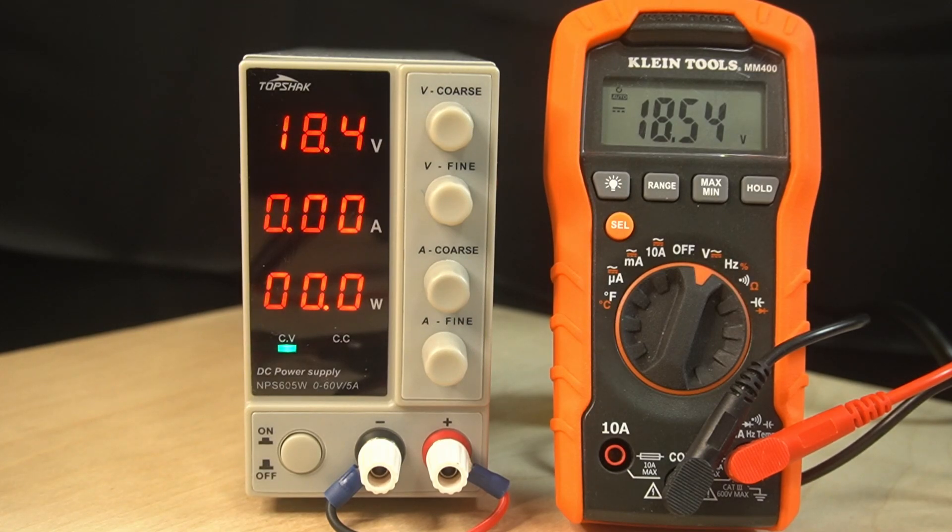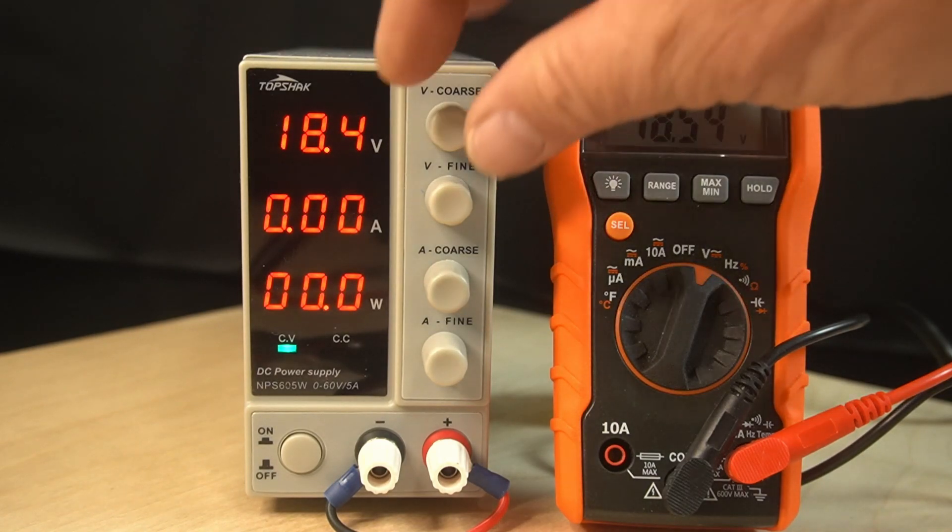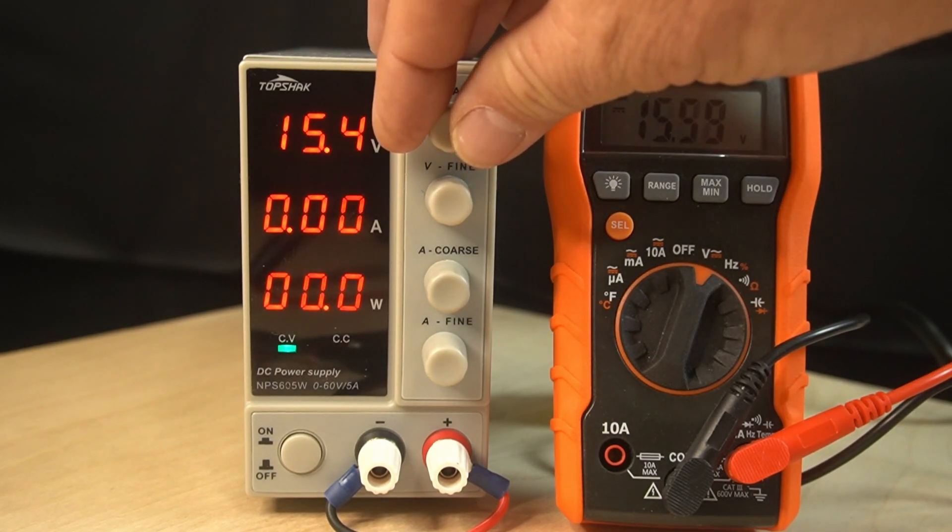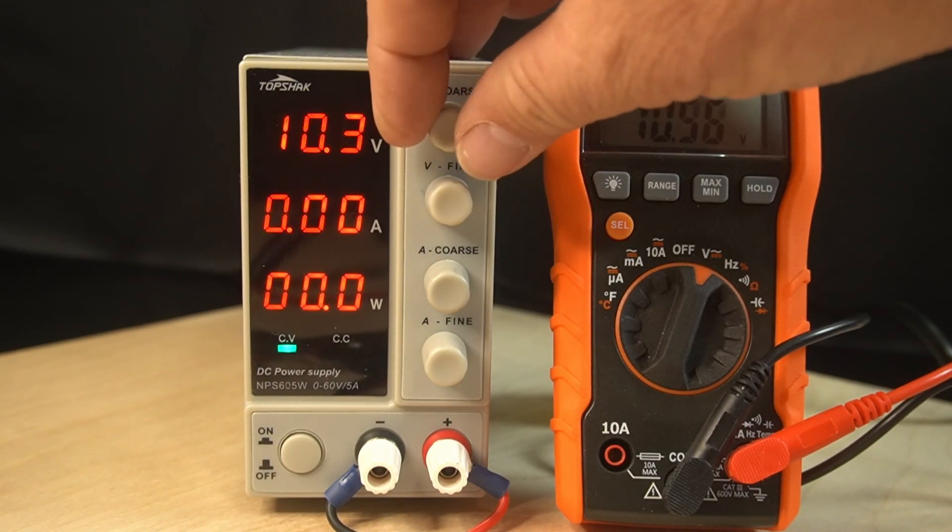So it shows 18.4 on the Top Shack. And then on the Klein it shows 18.54. We'll even bring it down a little further and just see how it does. Let's just set this. Let's see if we can set this at 12.